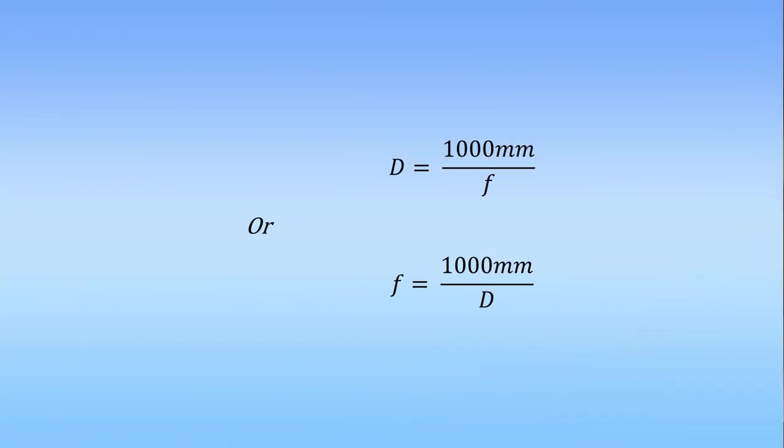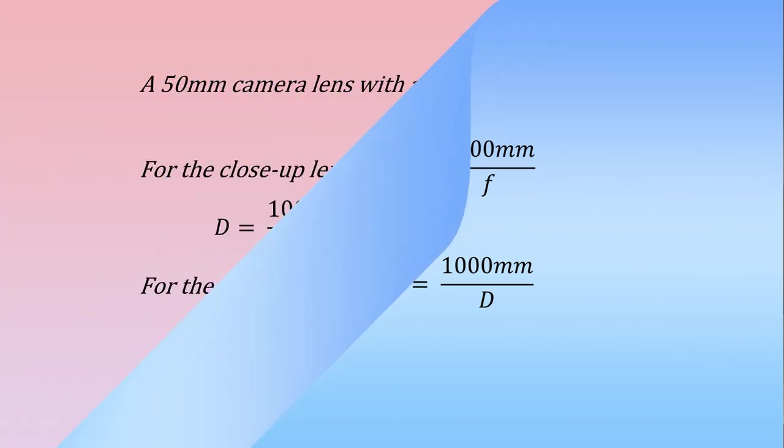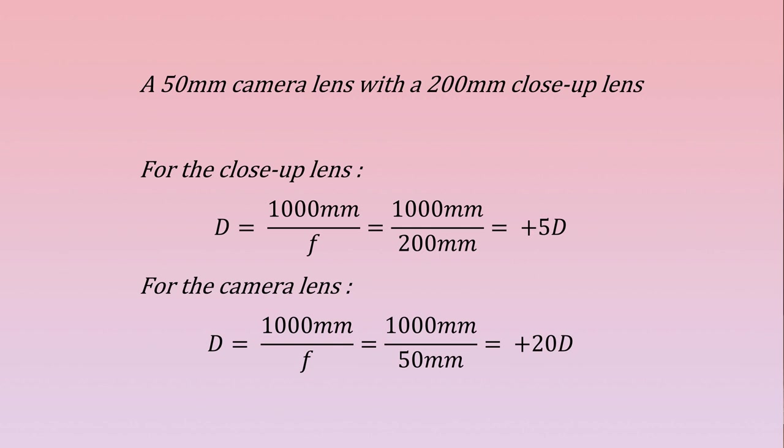We saw in a previous video called Close-up Lens 101 the relationship between the focal length of a lens and its diopter value, where D, the diopter value, equals 1000 mm divided by the focal length. If a close-up lens has a 200 mm focal length, its diopter value will be D equals 1000 divided by 200, which is plus 5 diopters. The same way, a standard 50 mm will have a diopter value of 1000 divided by 50 equal to 20 diopters.